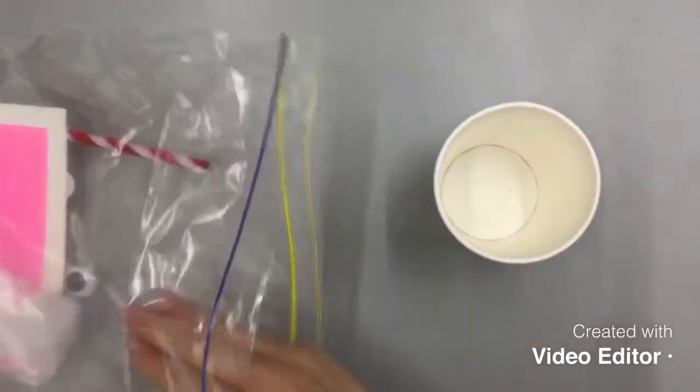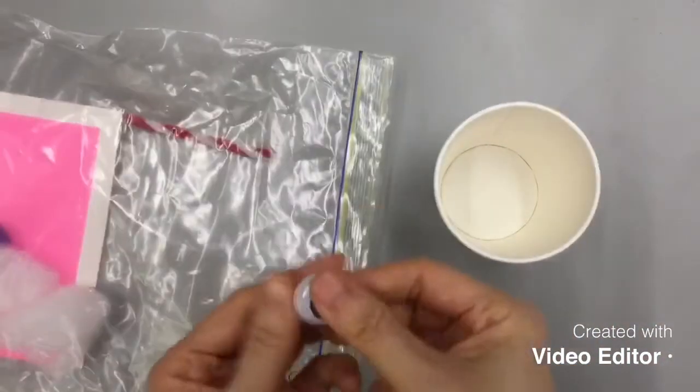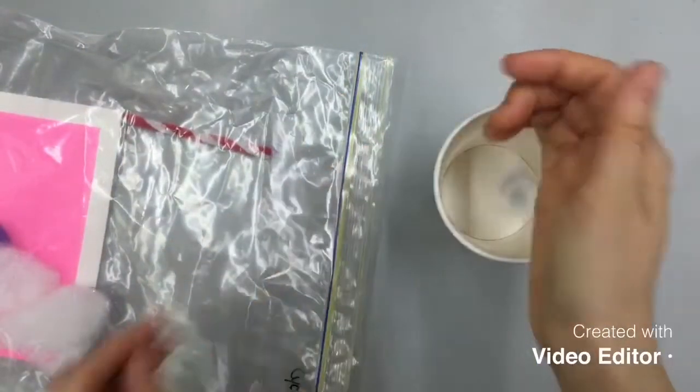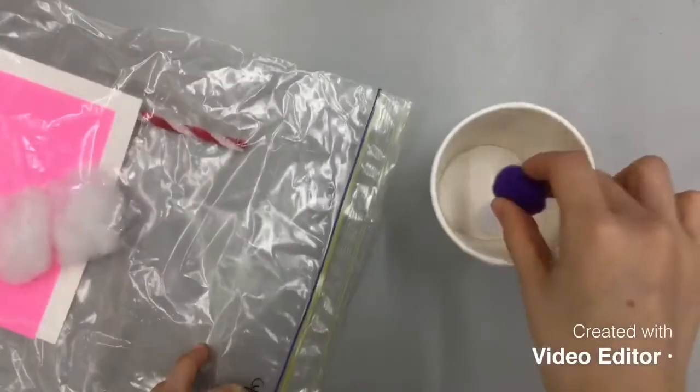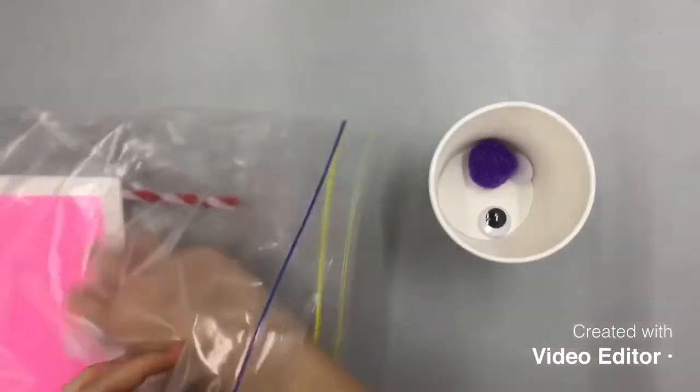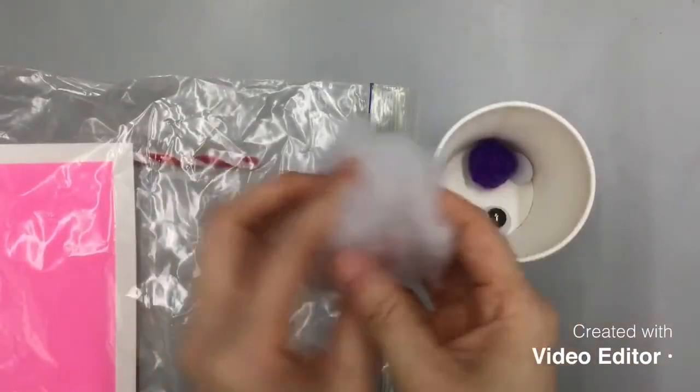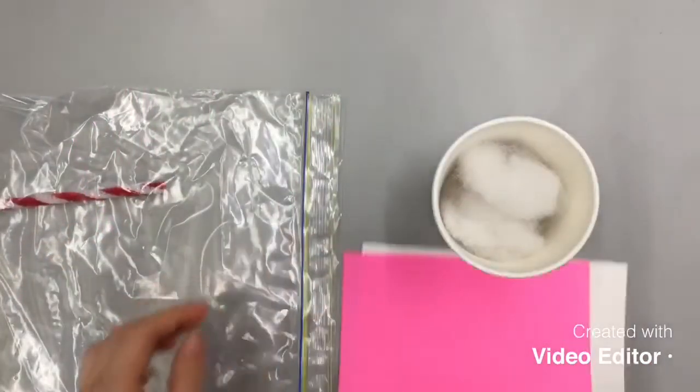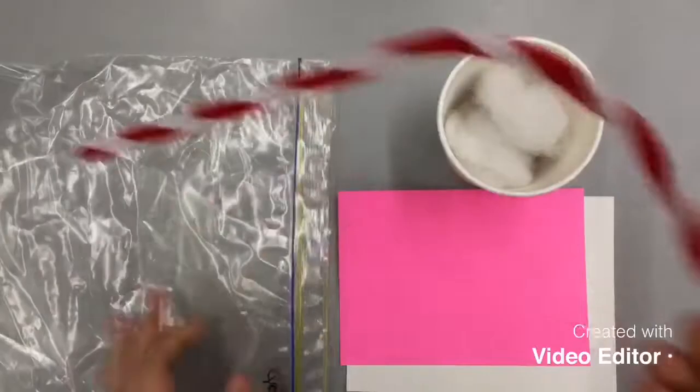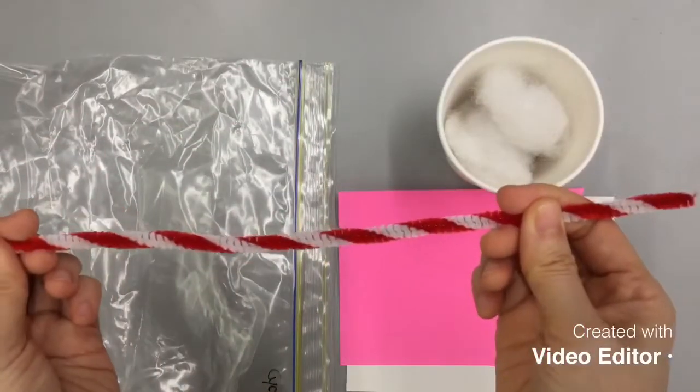A paper cup, of course. A pair of wiggly eyes. A pom-pom that will be a nose of the bunny. This fluffy cotton to be the snout of the bunny. Two pieces of paper will be used to make ears. And finally, the pipe cleaner for the handle.